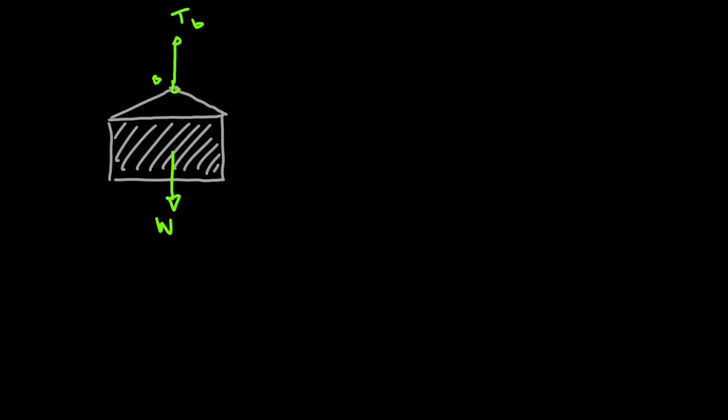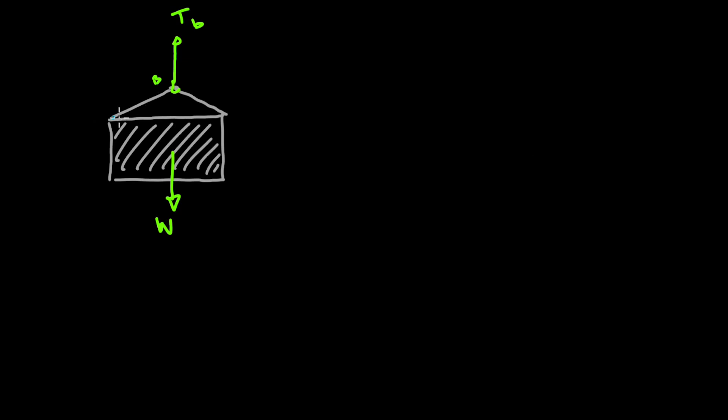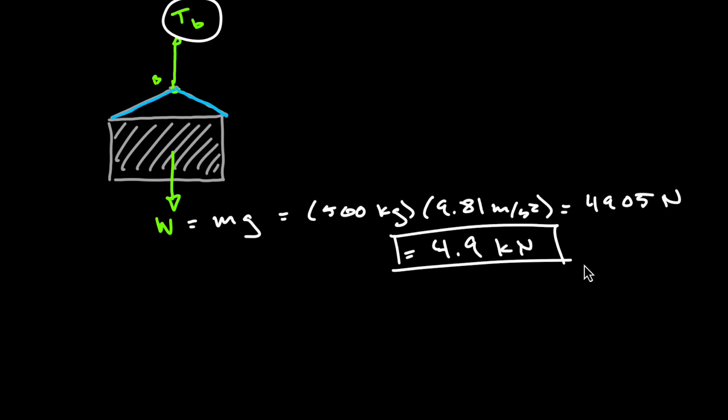Now getting back to our original problem you have to keep in mind that this cable here that we had originally called cable ABC that's different from the cable that's hooked on to it pulling in the vertical direction. Now that force we'll just call it TB to differentiate from cable ABC and the forces have to balance on the system as a whole as well. And so we're actually given the mass of the crate at the beginning of the problem and because we know the acceleration due to gravity we can actually just calculate the weight of the box. So the actual weight of the box is 4.9 kilonewtons.